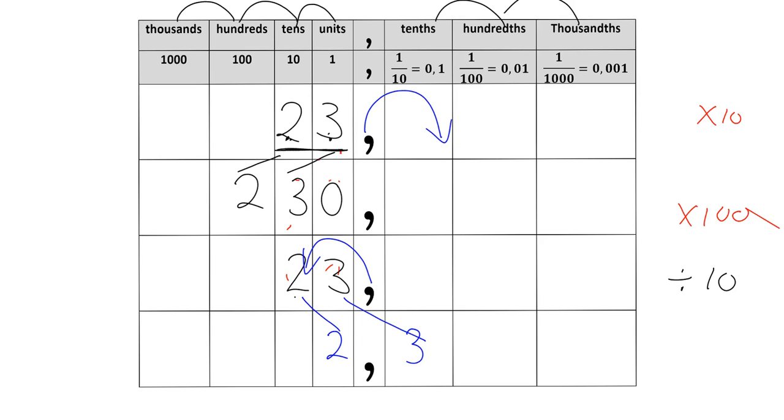Hopefully that gives you a little sense of why the trick works. And so you can now feel happy to use the idea that when you're multiplying a decimal by a power of 10, you can move the comma over to the right. And if you're dividing by a power of 10, you move the comma to the left.